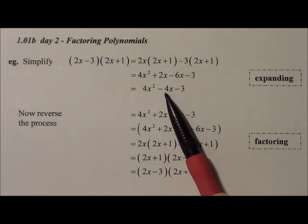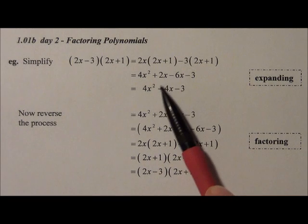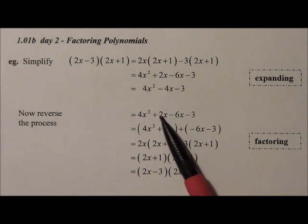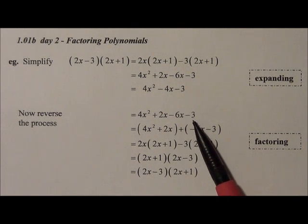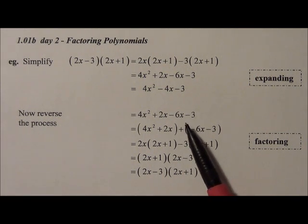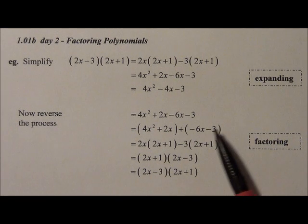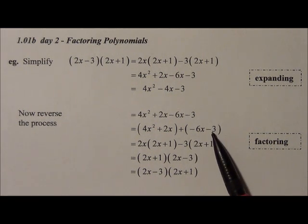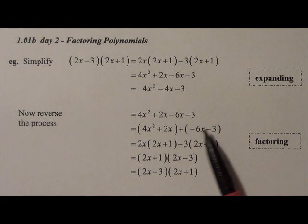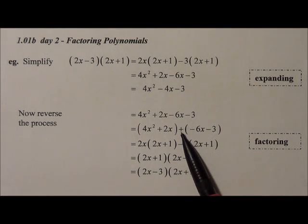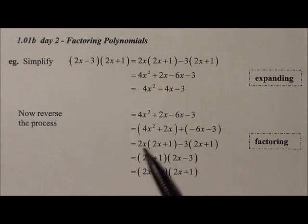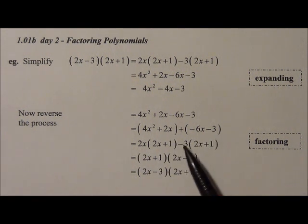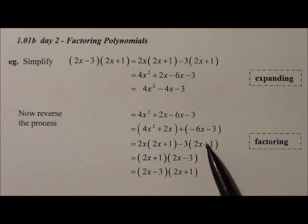Now to reverse that process, we start here, and we split apart this -4x to get +2x - 6x. We're going to group the first two terms, group the third and fourth terms, and when you group the third and fourth terms, we're going to keep the negatives in the brackets, and then they would be separated by a plus sign. Then we common factor out of here, which is 2x, we common factor out of the second bracket, which is -3, and the two brackets that are remaining are the same, which is great.